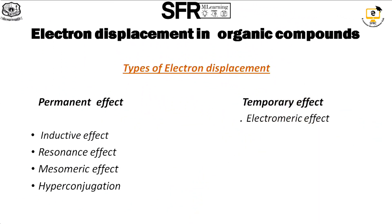In an organic compound, atoms are held together by covalent bonds. The movement of electrons in a molecule is influenced by reactivity. The different types of electron displacement are permanent displacement and temporary displacement. Examples of permanent effects are inductive effect, resonance effect, mesomeric effect, and hyperconjugation.